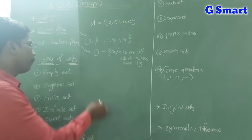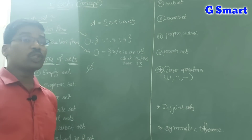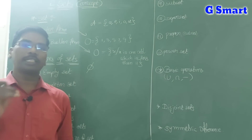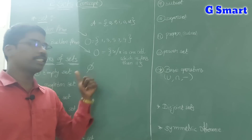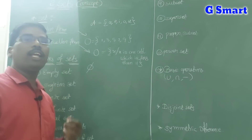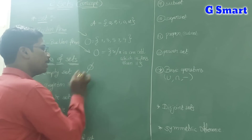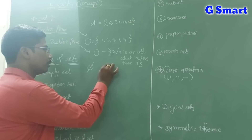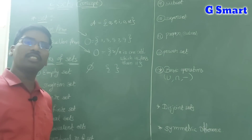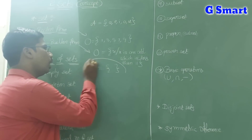The empty set is denoted by φ (phi). In general, they will ask for an example in the exam. The empty set can also be written as flower brackets with no elements inside. So φ and { } are equal — these two representations are the same.